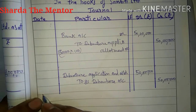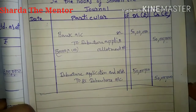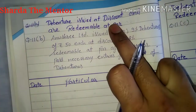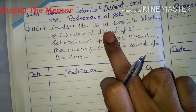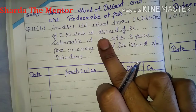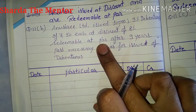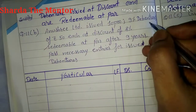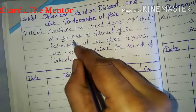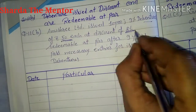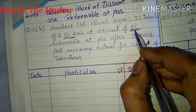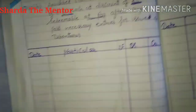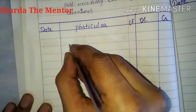The amount remains the same — that is the first condition. When we talk about the second condition, it means debenture issued at discount and redeemed at par. Annushree Limited issued 10,000 9% debentures of 50 each at a discount of 8%, redeemable at par after 9 years. Discount and premium are always calculated on the face value.